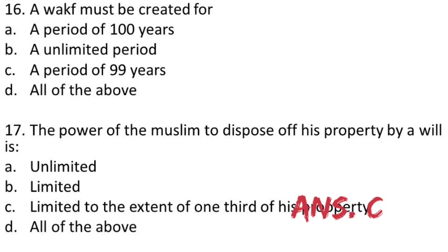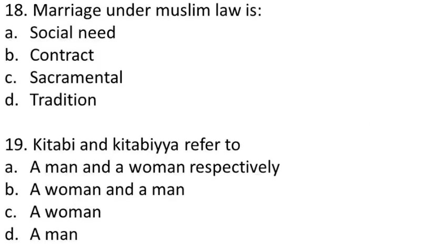Question 18: Marriage under Muslim law is — (A) a social need, (B) a contract, (C) sacramental, (D) a tradition. The answer is B: it is a contract. Proposal and acceptance are the required conditions for a Muslim marriage.